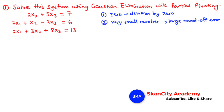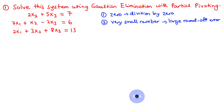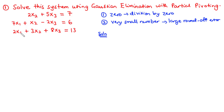So how do we handle such situations? That leads us to today's lesson, where we are going to learn how to solve a system of n linear equations with n unknowns using Gaussian elimination with partial pivoting. So we have an example here — let's try to solve it together.